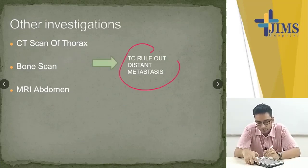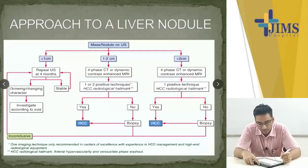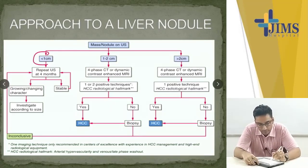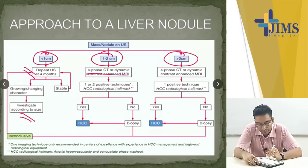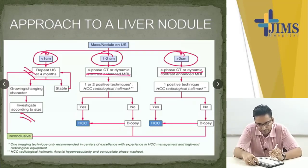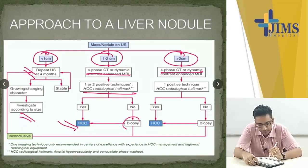Other investigations for ruling out distant metastasis include bone scan, MRI, and CT scan. Approach to a liver nodule incidentally found on USG: if less than 1 cm, follow up with USG and investigate if growing. For 1 to 2 cm, do a four-phase CT. For more than 2 cm, do a four-phase CT. If the HCC radiological hallmark is present, diagnose as HCC; if not, biopsy is needed.